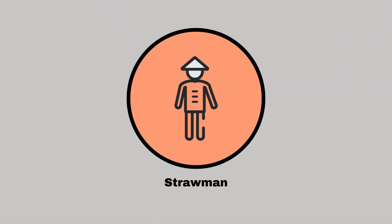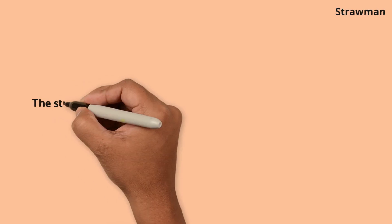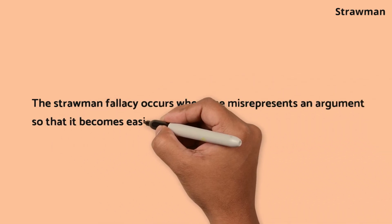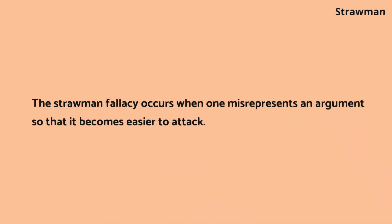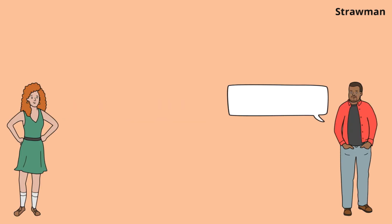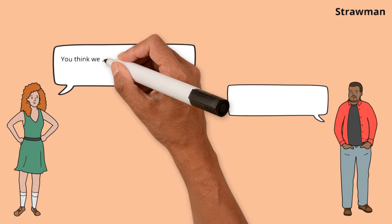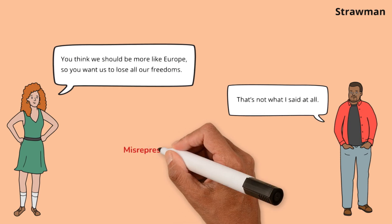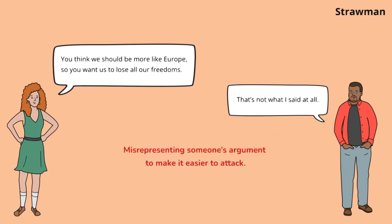Strawman. The strawman fallacy occurs when one misrepresents an argument so that it becomes easier to attack. Harper distorts Jordan's argument to make it easier to attack. Jordan clarifies their original point, showing the importance of addressing the actual argument presented.